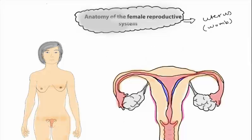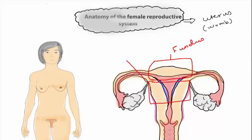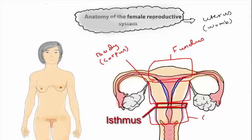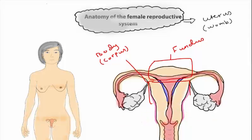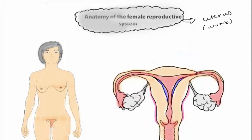The uterus is divided into four parts: the fundus, the upper part; then the body or the corpus; the isthmus; and the cervix. The uterus is composed of three layers, the inner layer near to the lumen being the endometrium.